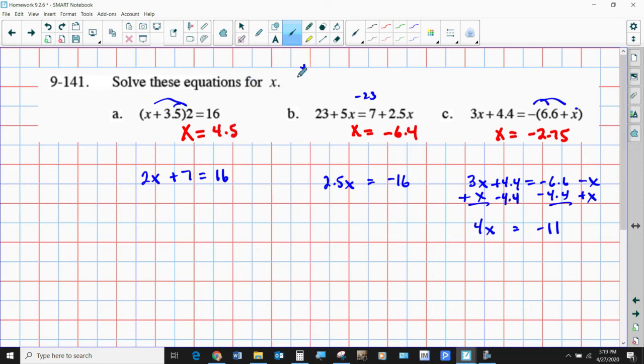So from here, divide by 4, you get negative 2.75. Keep in mind, you should always check your solutions. Plug this number in here and see if it works. 4.5 plus 3.5 is 8. Is 8 times 2, 16? Yes, it is. Some of them are a little bit harder to do mentally, but it's worth it to make sure you've got the correct answer, especially if you're taking an assessment or a test. Do not skip the check.